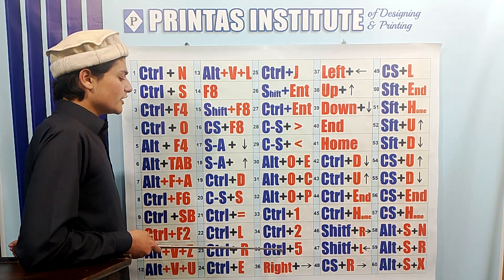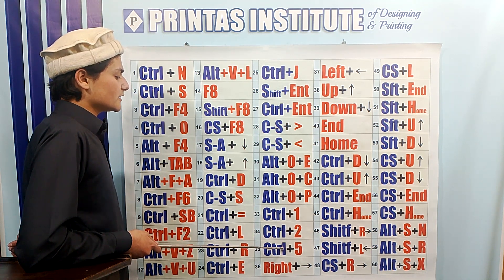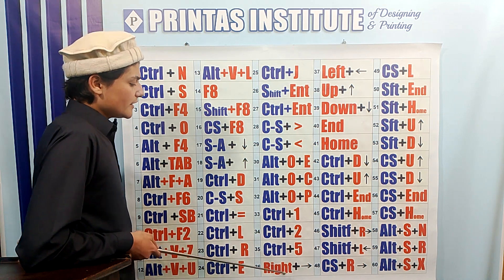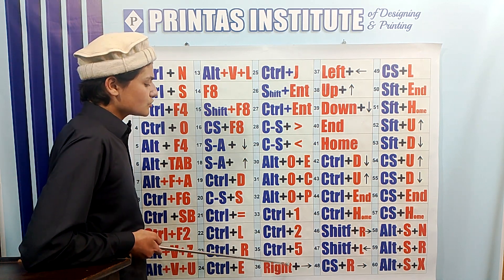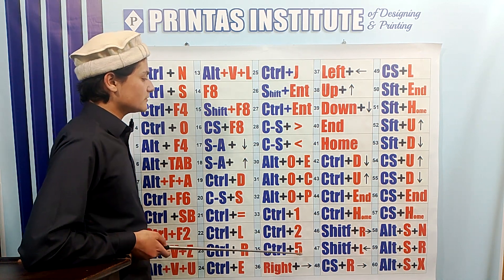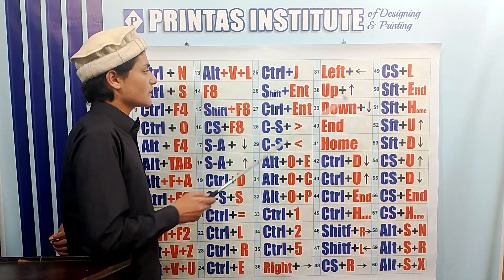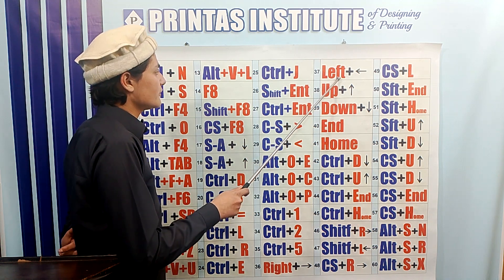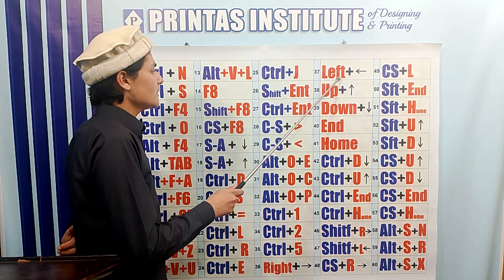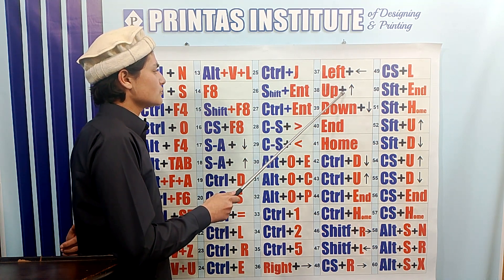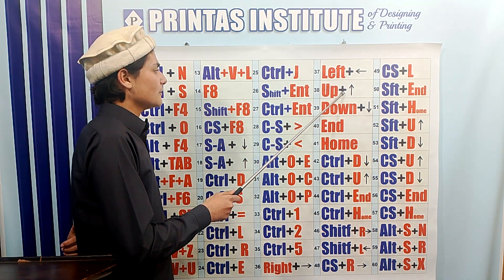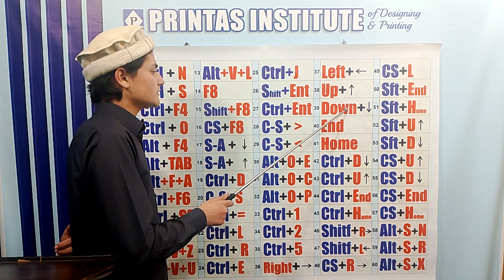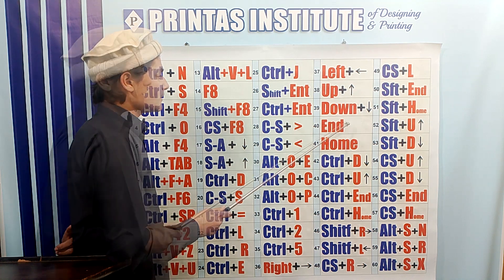There is a shortcut used to set the line spacing to 1.5. Alt O Right Arrow is used to move the cursor to the right side. Alt O Left Arrow is used to move the cursor to the left side.